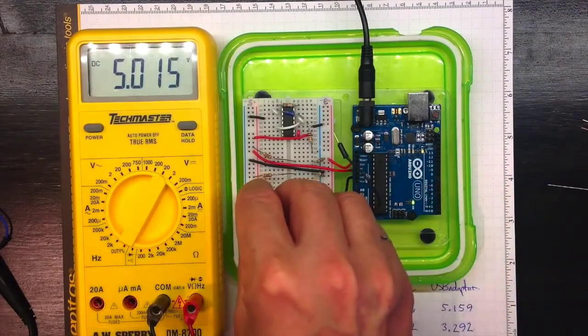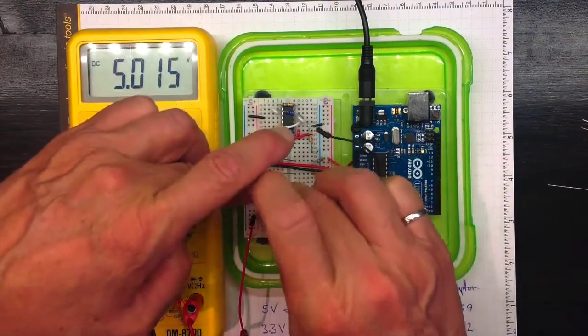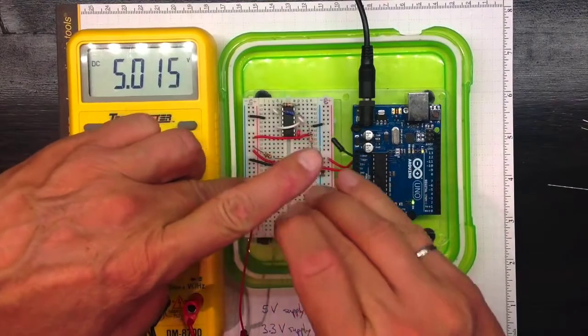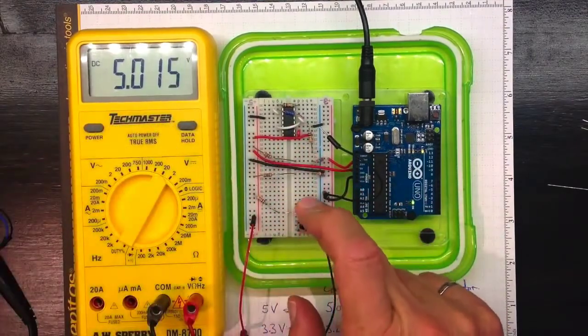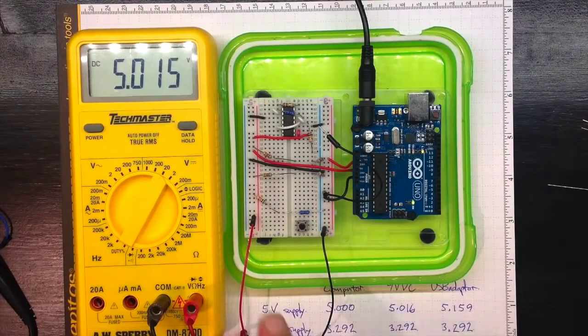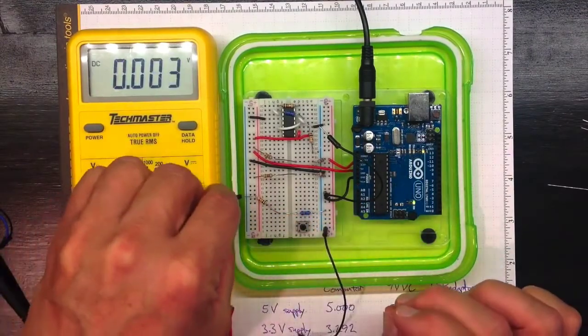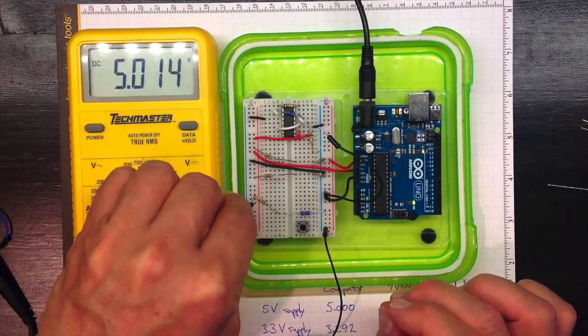So if I connect this one to plus 5 volts and connect the other end of it to the 2K resistor, and the 2K resistor is connected to ground, then I should see 5 volts right here, which I do.